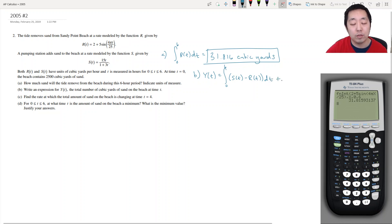But we also need to consider the fact that we started out with 2500. So this is how much was added minus how much is subtracted, plus 2500. So that would be how I would write that. And if I were on the exam I would fill in S of T and R of T explicitly.